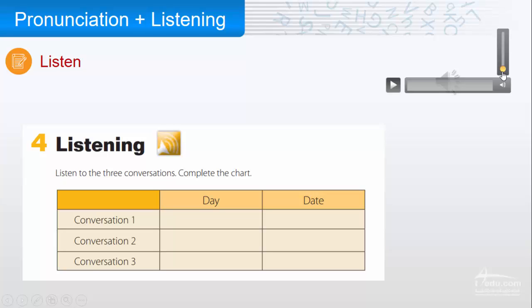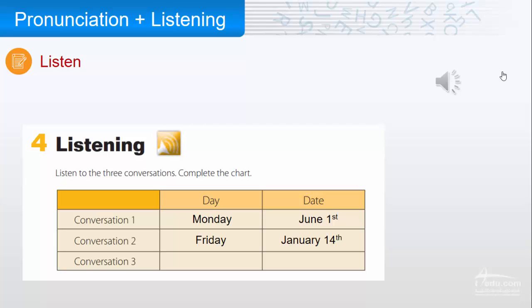Okay, so conversation number one: when is their meeting? It's on Monday, June 1st. Conversation two: he's going on Umrah on Friday, January 14th. And her sister's wedding will be on Friday, June 10th.